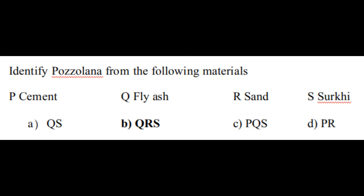The correct option is that pozzolana is QRS. That is, pozzolana is a combination of fly ash, sand, and surkhi.